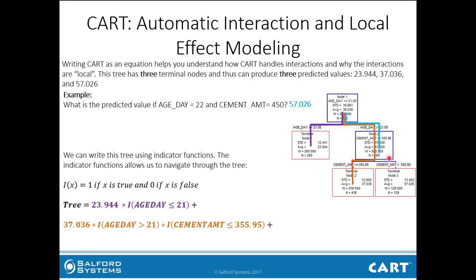Looking at the path down to terminal node 3, this blue portion is represented by 57.026. Then we have i(age_day > 21) and i(cement amount > 355.95), which corresponds to the path leading to that terminal node.